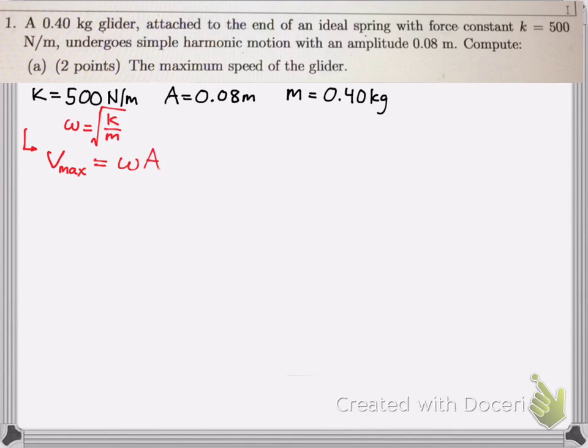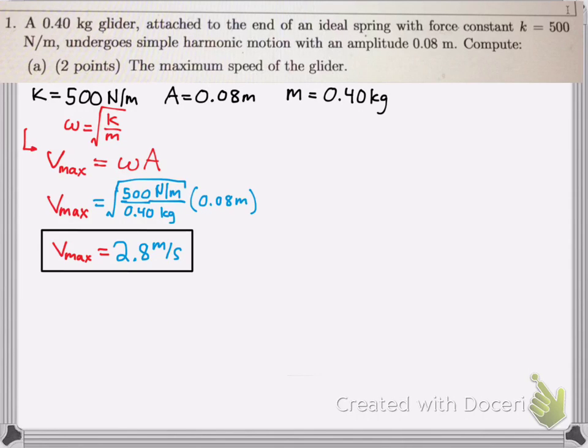And how can you figure that out? Well, omega is radians per second, right? And if you multiply that by A, which is meters, you'll get velocity. So that's one way to think about it. So to get v max, we just plug omega in there. So that's radical k over m times A, which is right there. And we get 2.8 meters per second as v max.